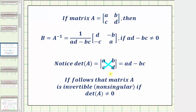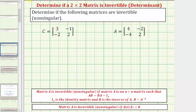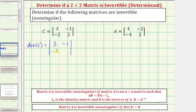Going back to our two examples, let's begin by finding the determinant of matrix C. If the determinant does not equal zero, then matrix C is invertible or non-singular, meaning it does have an inverse. Notice we're not asked to actually find the inverse. We can express the determinant of matrix C using vertical bars, where we have the elements three, negative one, negative two, two.